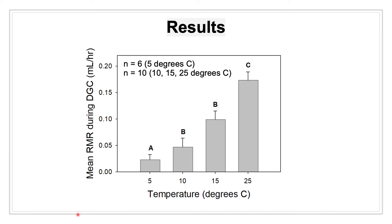Mean RMRs during DGC were found to increase in an exponential pattern with temperature. Significant differences, as denoted on this graph through differing letters between treatments, were found between the control treatment at 25 degrees Celsius and the 5,